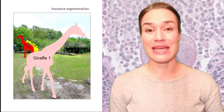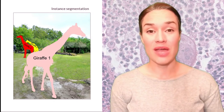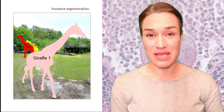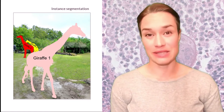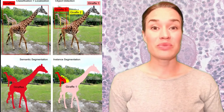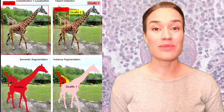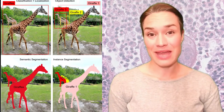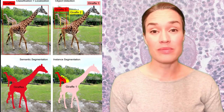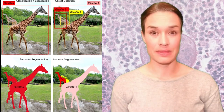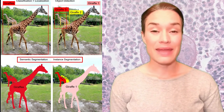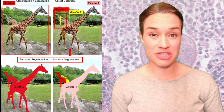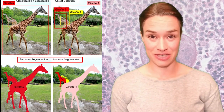If we want to have each giraffe separated, we implement instance segmentation. In instance segmentation, all the giraffes are classified as giraffes, but each giraffe is also delineated separately — each instance of the class giraffe is delineated individually. So we begin with localization and classification, move into object detection, then semantic segmentation, but for many problems we need instance segmentation. The key difference is that instance segmentation includes the object detection step within the segmentation step.